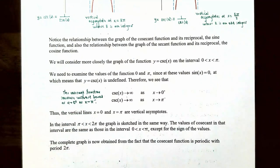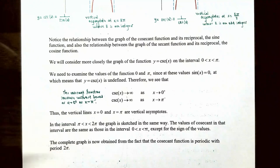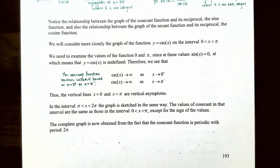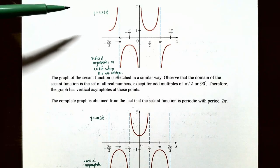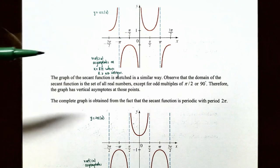So x equals 0 and x equals π are vertical asymptotes for the cosecant function. On the interval between π and 2π, the graph is sketched in the same way. The values of cosecant on that interval are the same as those on 0 to π except for their sign, since the sine function is below the x-axis between π and 2π. So the cosecant function decreases without bound on the right side of x equals π and also as x approaches 2π from the left. The complete graph follows from the fact that the cosecant function is periodic with period 2π radians.